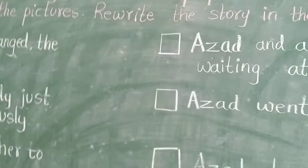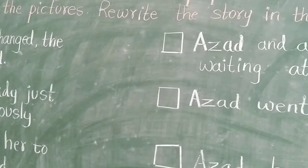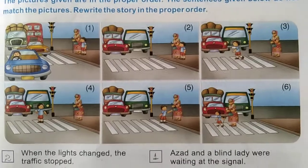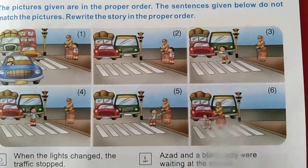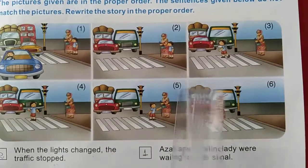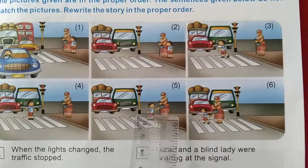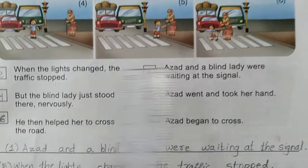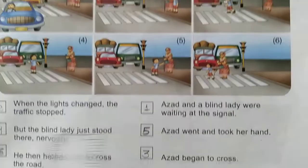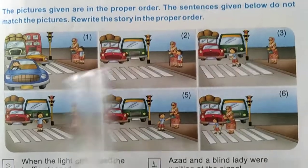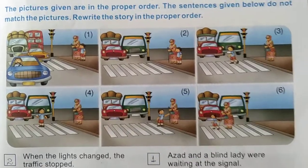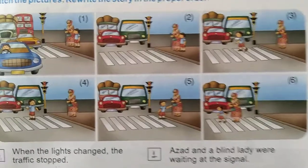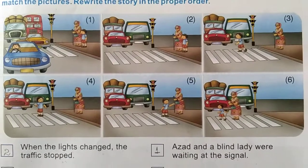So here they have given pictures. You can see in the book. These pictures are in proper order, but below the pictures they have given some sentences. So we should see the picture and rewrite the story in the proper order.